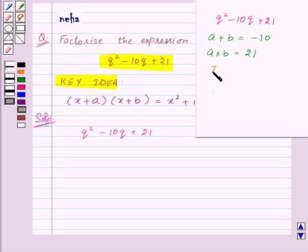Now, we know that 7 into 3 is equal to 21 and 7 plus 3 is equal to 10. But we need a plus b equal to minus 10, so that is only possible if we take both the numbers as negative: minus 7 and minus 3.